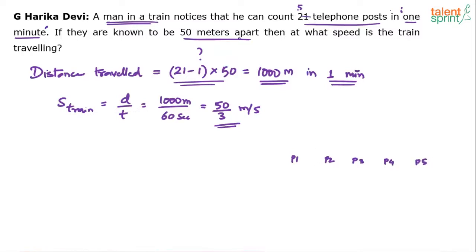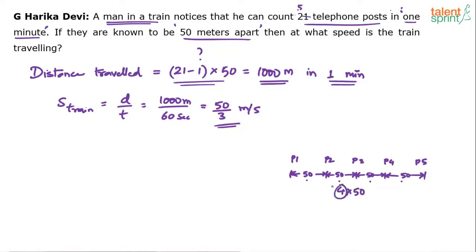They are known to be 50 meters apart, meaning the distance between two consecutive poles is 50. So between each pair of adjacent poles the distance is 50. How many 50s do we get? We get 4 of them — giving 4 into 50. That 4 is nothing but 5 poles minus 1. And this is how it works.